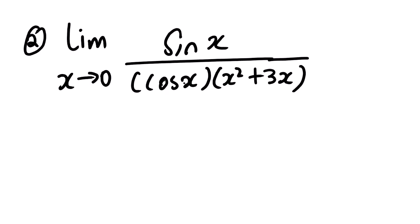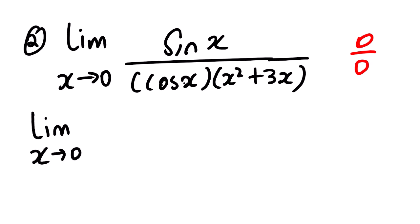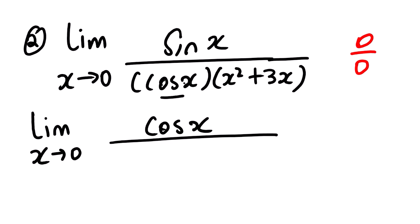Our second example: we can see that when we substitute 0 on the numerator and denominator, we are going to have the indeterminate form 0 over 0, so we can apply L'Hôpital's rule. To find the derivative of the numerator, the derivative of sin x is cos x, all over the derivative of the denominator. We can see that we have two functions, so we use the product rule. The derivative of cos is negative sin x, and we leave out the second function.